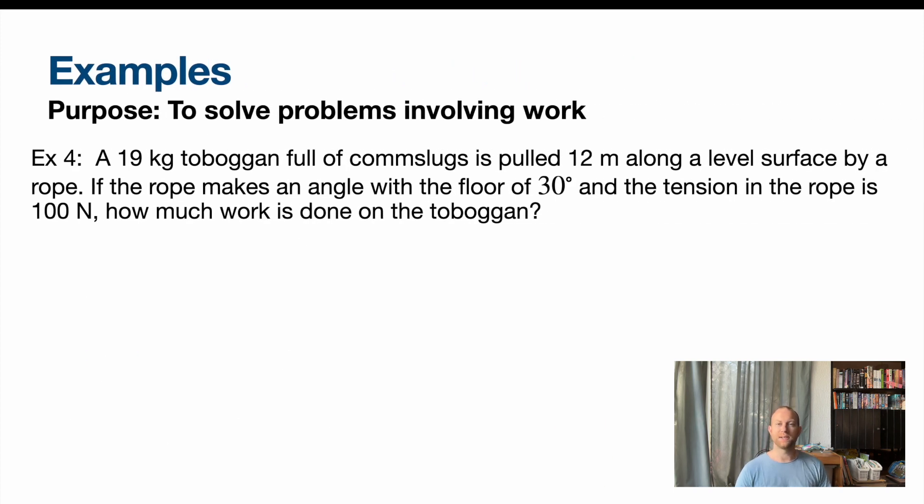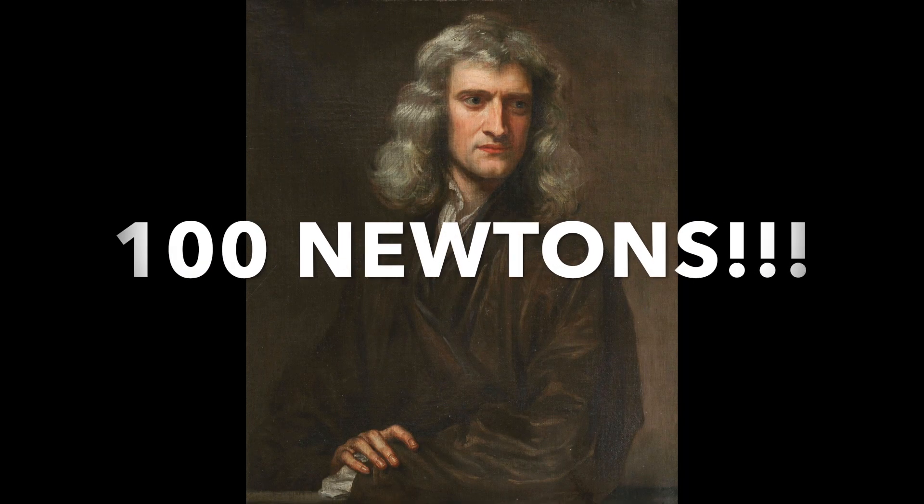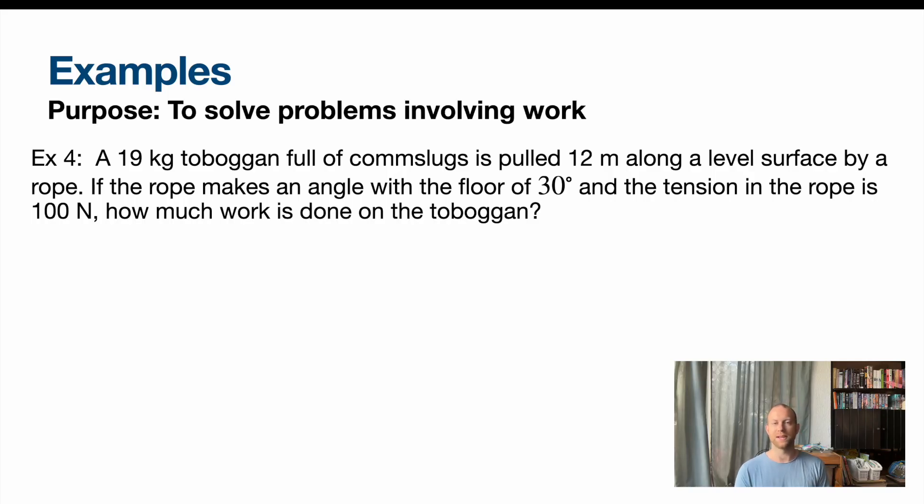We get a toboggan full of comp slugs being pulled 12 meters along the level surface by a rope. If the rope makes an angle with the floor of 30 degrees and the tension in the rope is 100 newtons, how much work is done on the toboggan? Toboggan, just a sled. I know you've seen this before. So here's our diagram. Here's our cute comp slug. Here's some forces. So Fg and normal - notice they are not equal this time. Here's the applied force at 30 degrees above horizontal. And we've got friction force. So if we want to know how much work is done on the object, we're still looking at force applied.